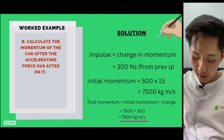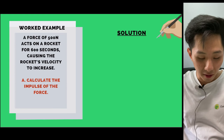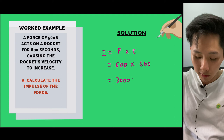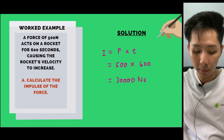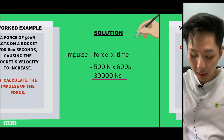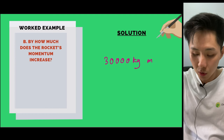Another question: a force of 500 Newton acts on a rocket for 600 seconds. Calculate the impulse: Impulse = F × t = 500 × 600 = 30,000 Newton second. By how much does the rocket's momentum increase? Since impulse equals change in momentum, the momentum increases by 30,000 kg m/s.